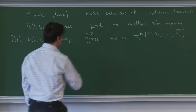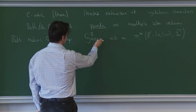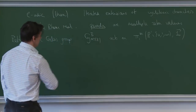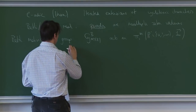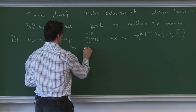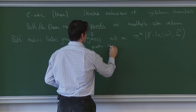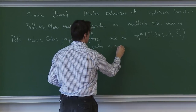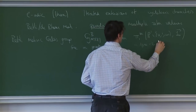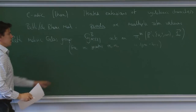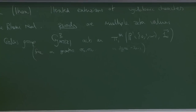This group is an extension of the multiplicative group by a pro-unipotent group whose graded Lie algebra is free on generators sigma_3, sigma_5, ... in degree -(2n-1). These elements are well known — they're called zeta elements or Soule elements.